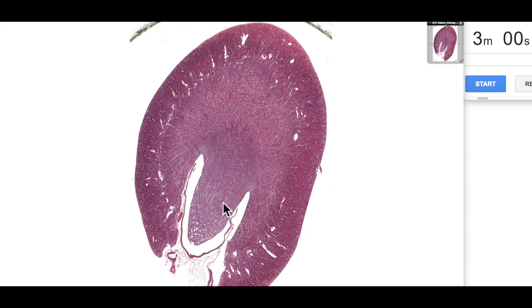Here's the renal papilla. This is part of the renal medulla. And what we're going to be focusing on in this video is the renal cortex, which is this region on the outside, and having a look at the fine detail there.